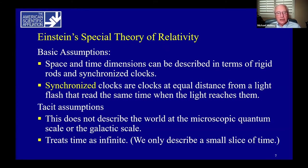The theory also has some underlying basic assumptions: that space and time dimensions can be described in terms of rigid rods and synchronized clocks. Synchronized clocks are clocks at equal distance from a light flash that read the same time when the light reaches each of them. The theory also has some tasks that are limiting assumptions. This does not describe the microscopic quantum world or the galactic world. This treats time as infinite, as we are only describing a very small slice of time.